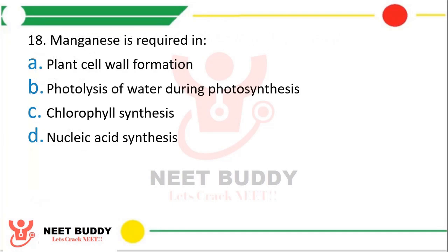Question number 18: Manganese is required in — plant cell wall formation, photolysis of water during photosynthesis, chlorophyll synthesis, or nucleic acid synthesis. The correct answer is Option B, i.e., photolysis of water during photosynthesis.